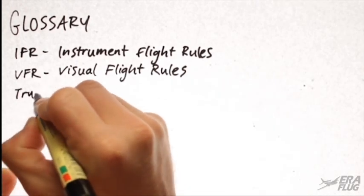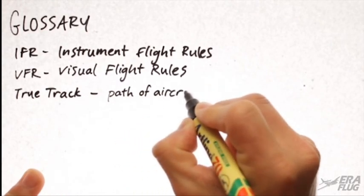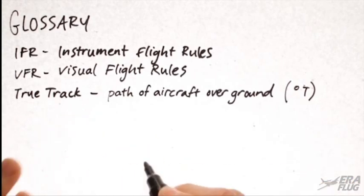True track, which is the flight path of the aircraft over the ground, measured in degrees true and taken off a map.